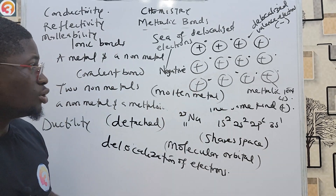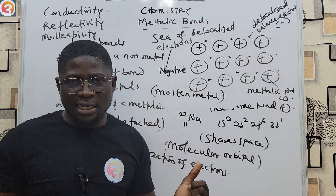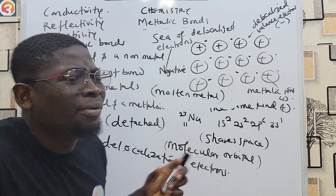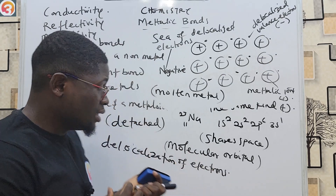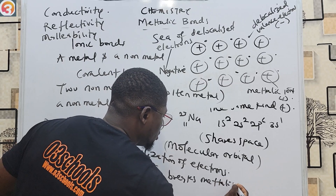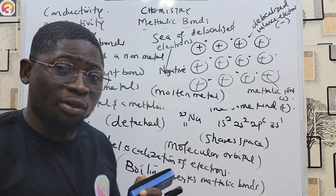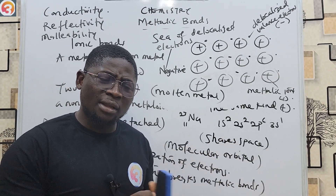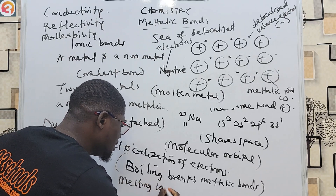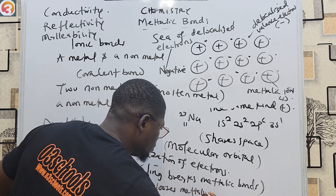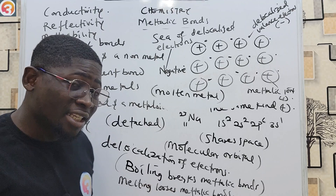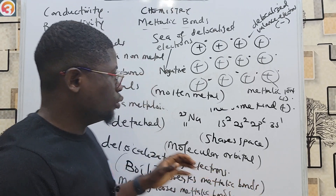These properties of metals are accounted for by the force of attraction between the sea of delocalized electrons and the metallic ions in the crystal lattice. An important point that can come out in your exam: what breaks metallic bonds? Boiling breaks metallic bonds. When boiling occurs, the metallic bonds are broken. Melting loosens metallic bonds but does not break them.